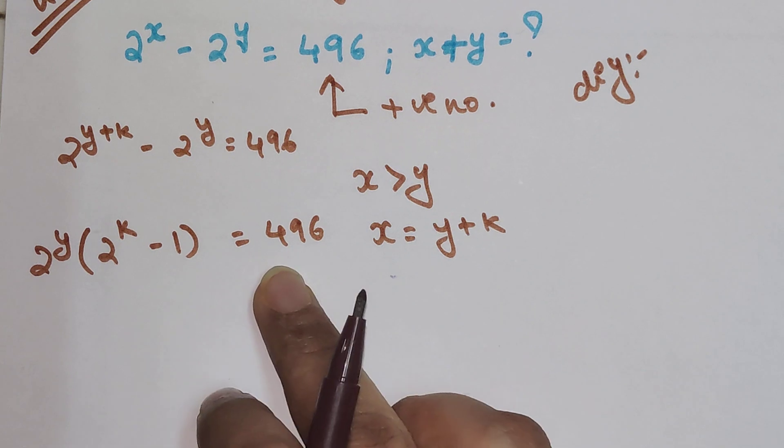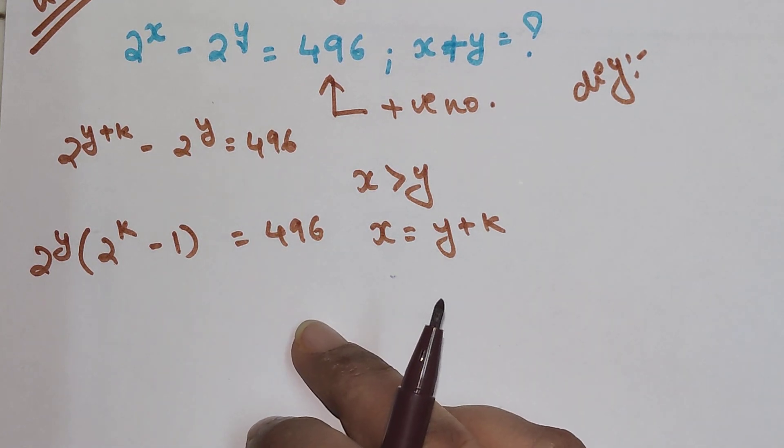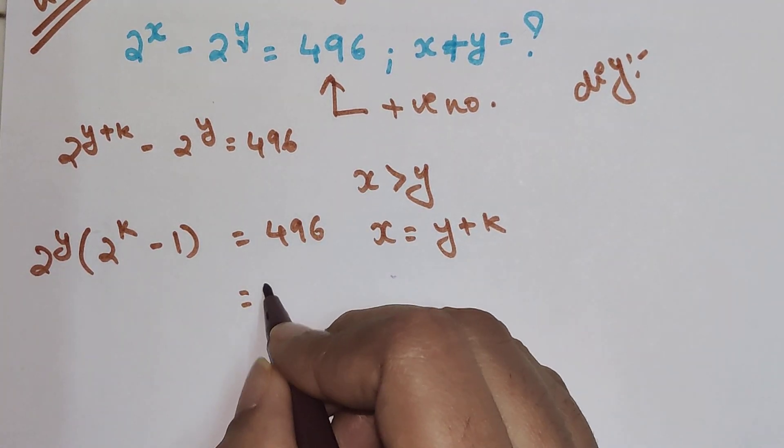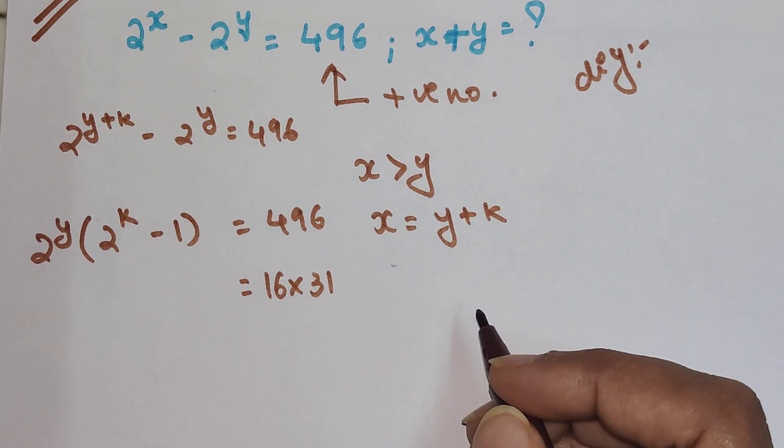So now we have come across 496. Here we need to write 496 in terms of 2. When you remove factors, you will come across 16 into 31 gets you 496.